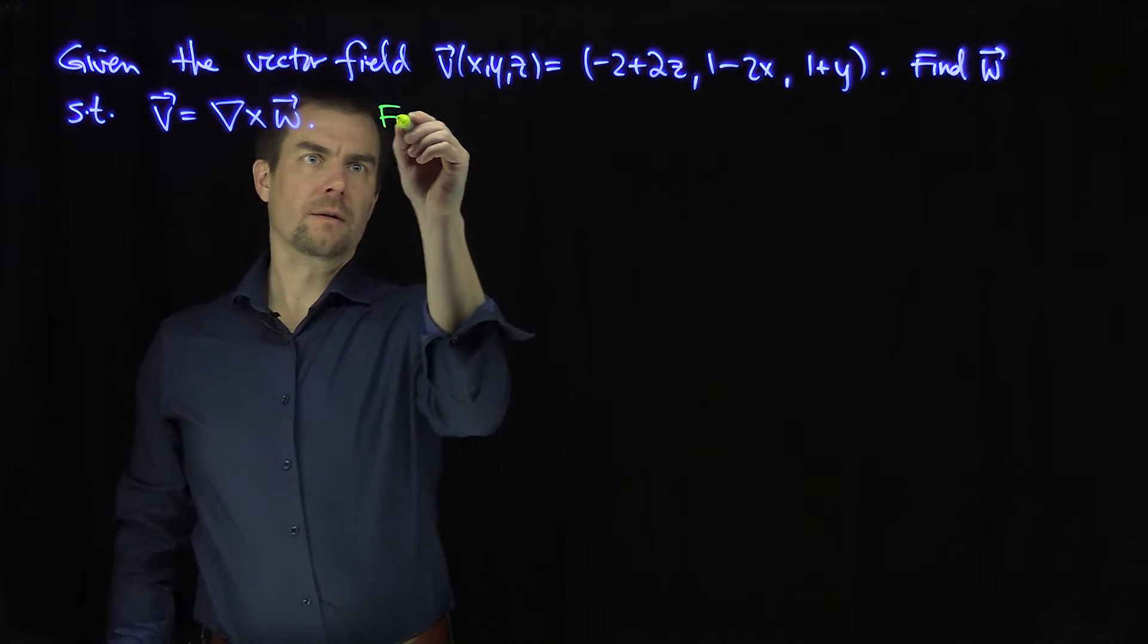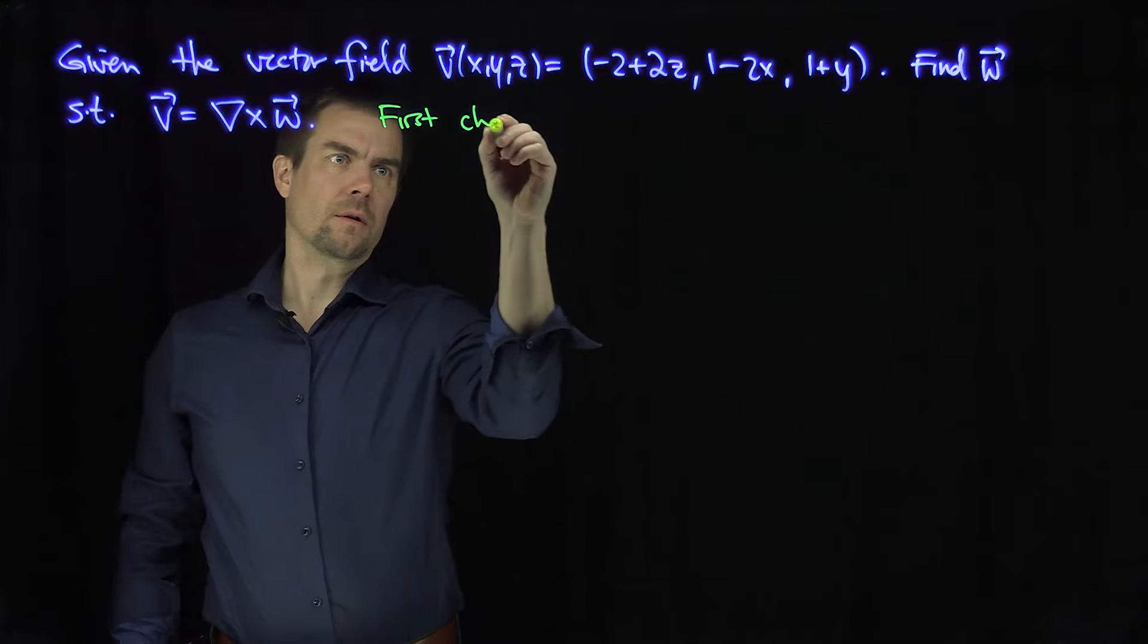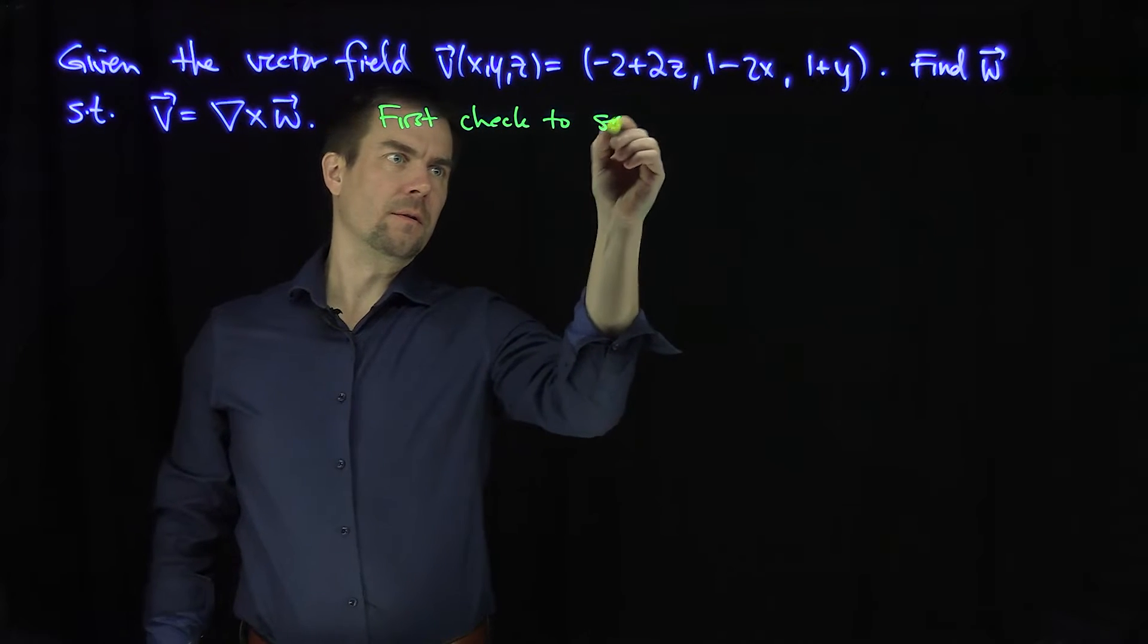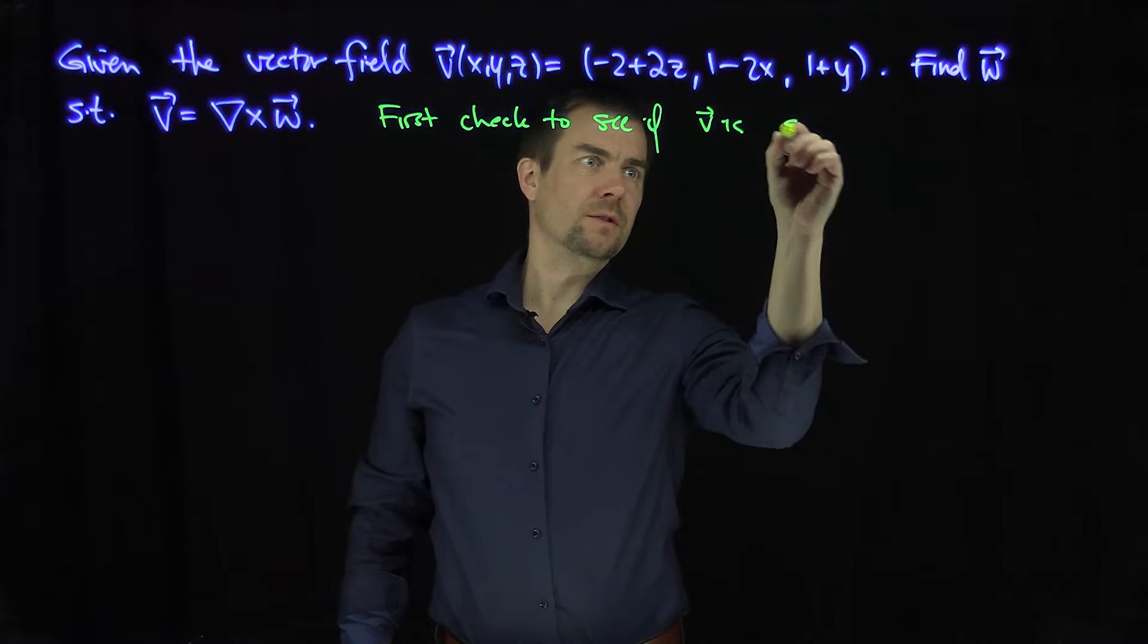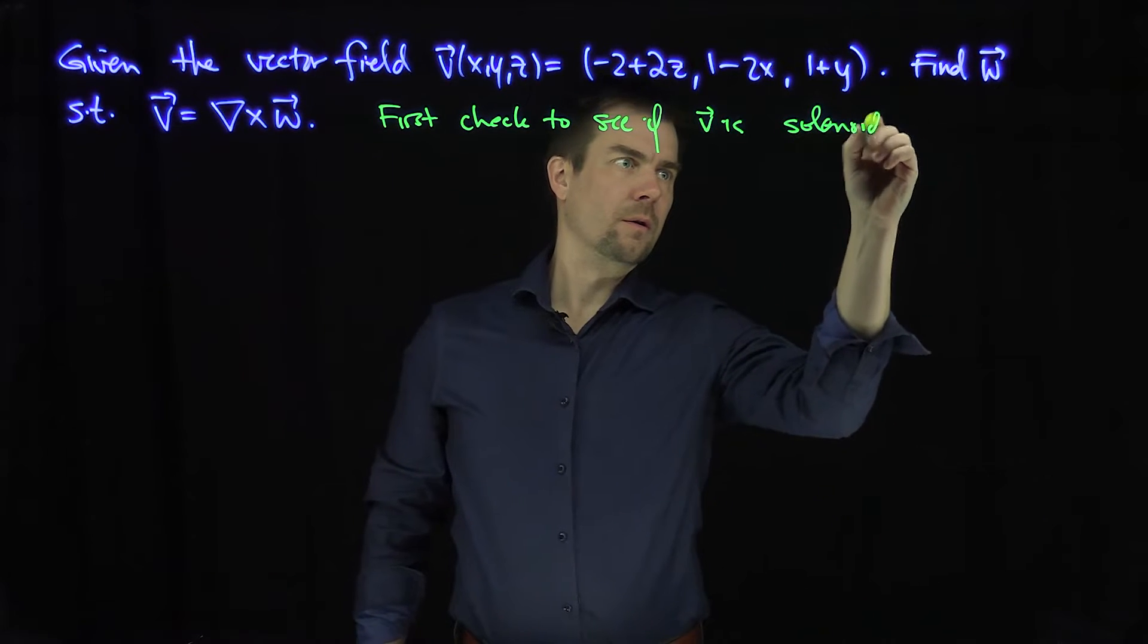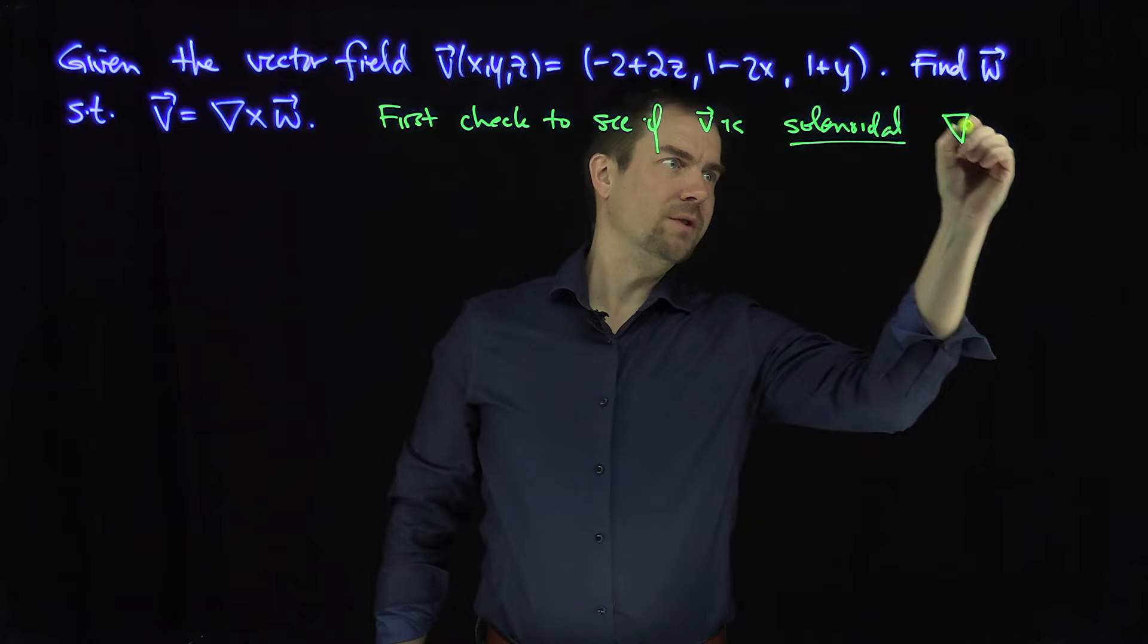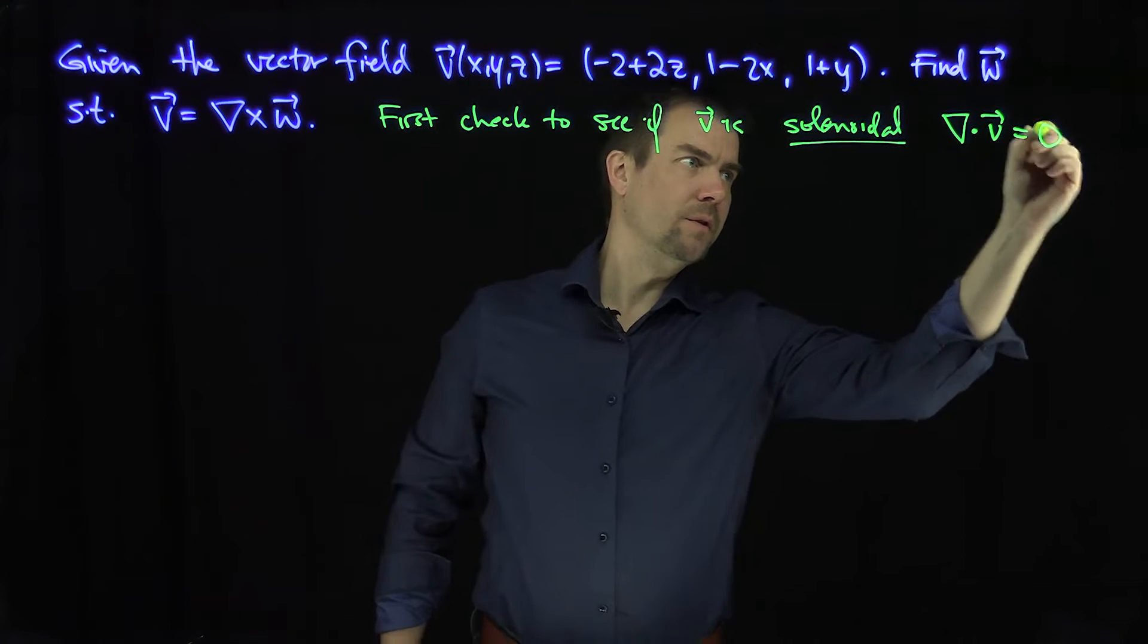First check to see if v is solenoidal. Solenoidal just means that divergence is equal to 0.